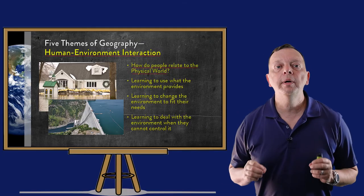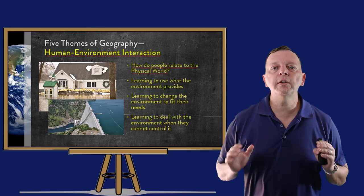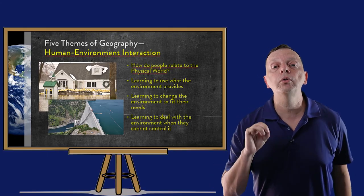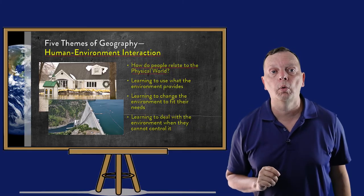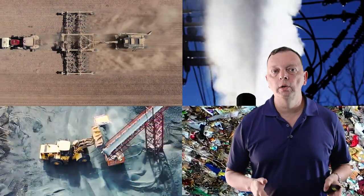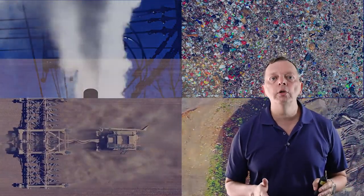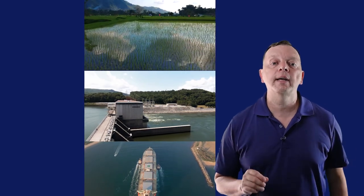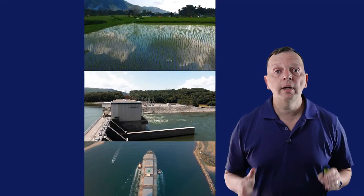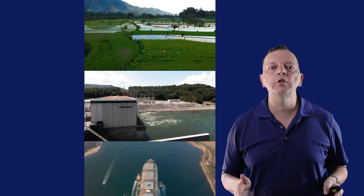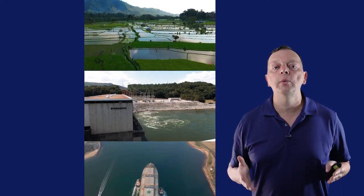Last, we have human-environment interaction. In this theme of geography, we ask how are people shaped by their environment, and how do they relate to the physical world? Human-environment interaction includes the effects of pollution, deforestation, and the overuse of resources. It also includes how people have made intentional changes to their environment, such as building dams, irrigation for agriculture, and the building of canals to support transportation. In studying this theme, how people have adapted their homes, clothing, and customs because of their environment is also examined.